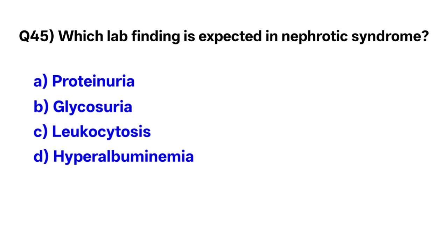Question number forty-five: Which lab finding is expected in nephrotic syndrome? The correct option is A, proteinuria.